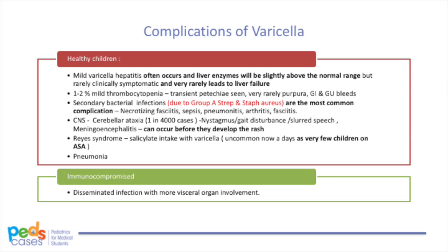Let us discuss some complications of varicella. The most common complication in healthy children is secondary bacterial infection due to group A strep or Staph aureus. This usually presents like impetigo and is readily treated with antibiotics that can even be used topically if the infection is minor. More serious infections include necrotizing fasciitis, bacterial sepsis, septic arthritis, and bacterial pneumonia or varicella pneumonitis. A non-infectious complication seen even in healthy children is mild varicella hepatitis, which is rarely clinically symptomatic.